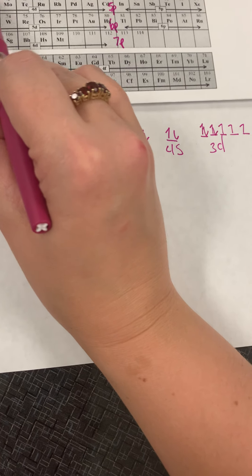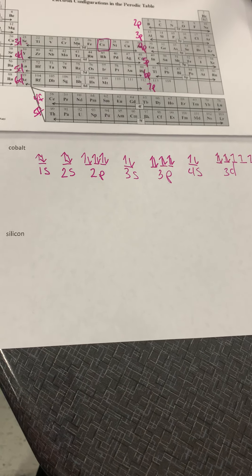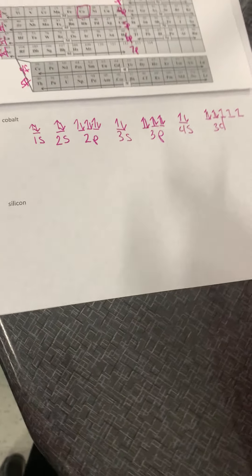That's how many electrons I could put in it. So this is the finished orbital notation for cobalt. Let's do silicon, and then I'll go back and do the quantum sets.